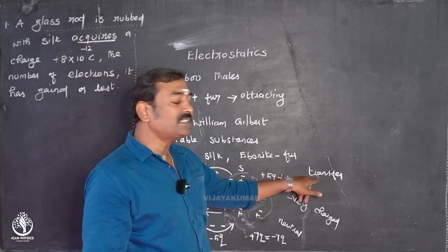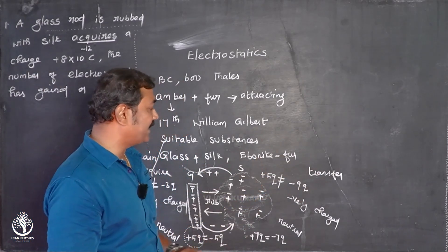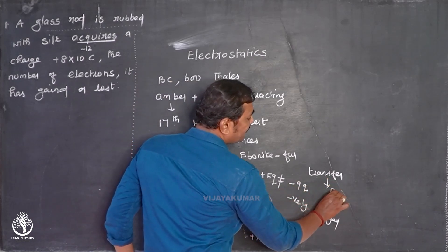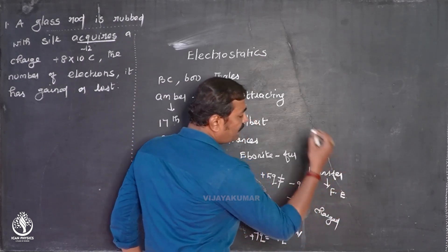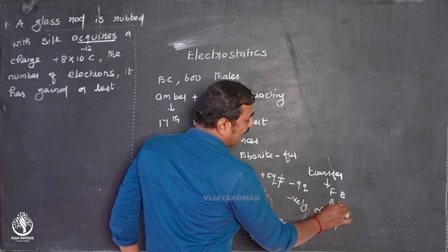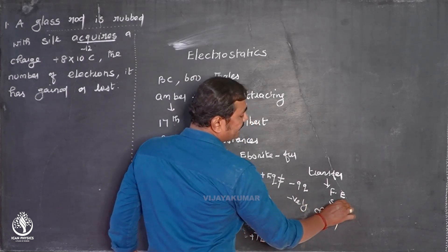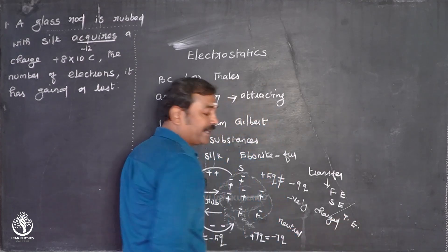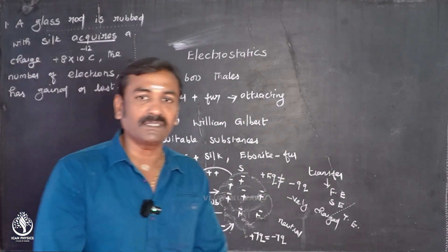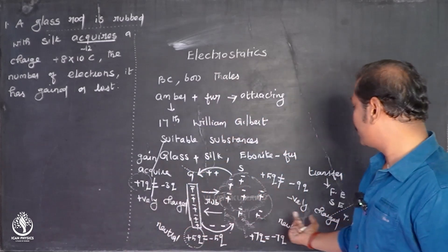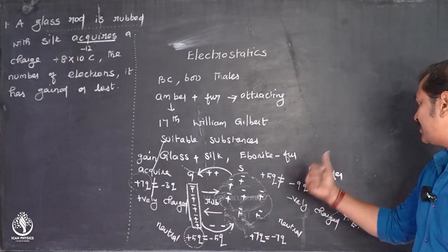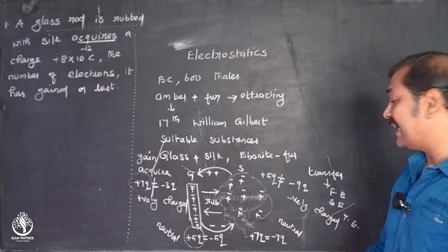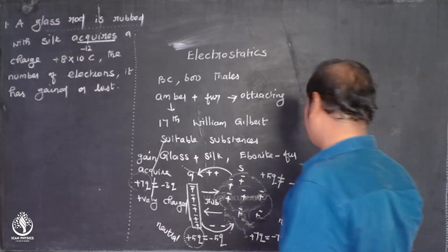When charges are transferred by rubbing, this is called frictional electricity, static electricity, or tribo electricity. In this state, the current is set to be zero.